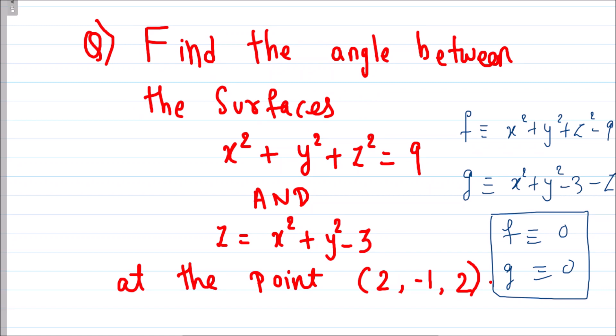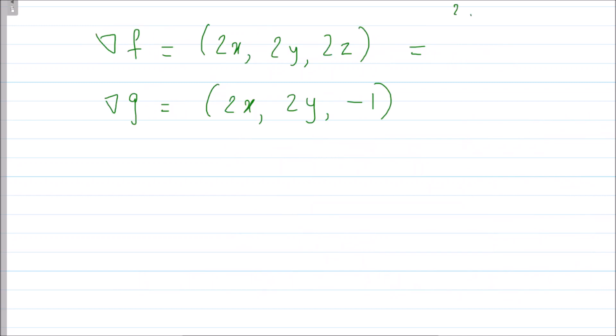Now in our case, what is the gradient of F? It is F with respect to X, F with respect to Y, and F with respect to Z. And what is gradient of G? Now what is the point given to us? The point given to us is (2, -1, 2). So wherever you have X, Y, Z, you replace it by 2, -1, 2. So what I will get? 4, -2, 4. And what will I get here is 4, -2, and -1.